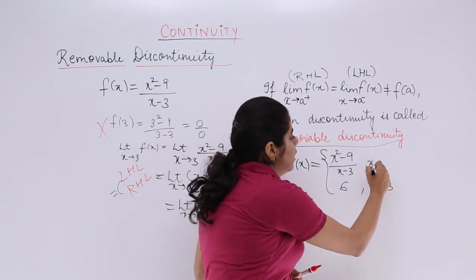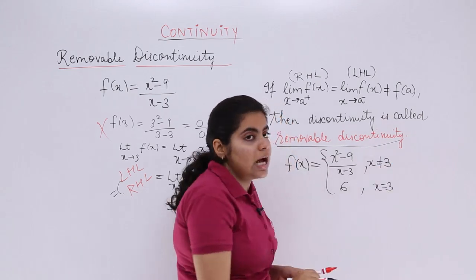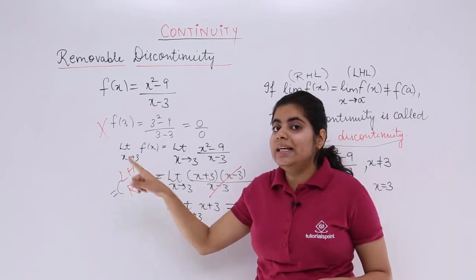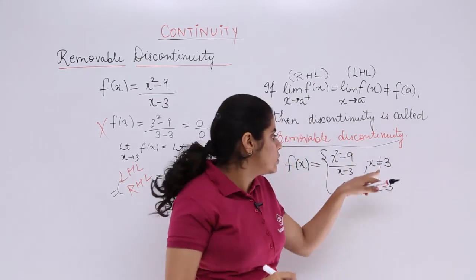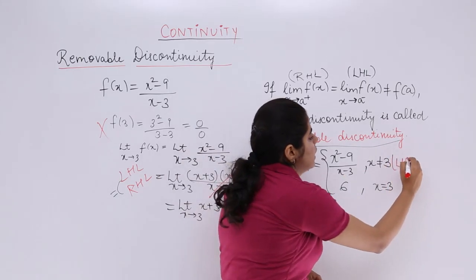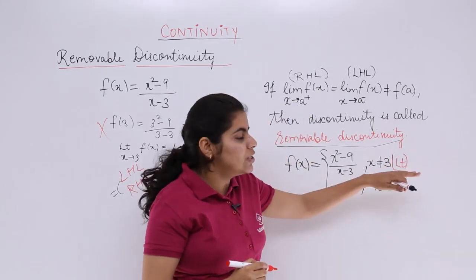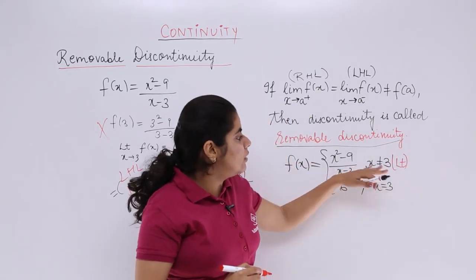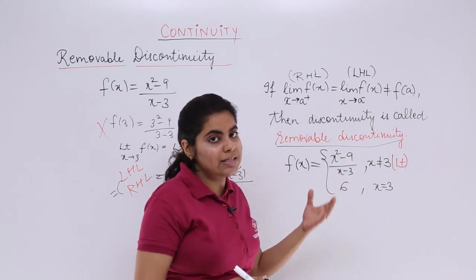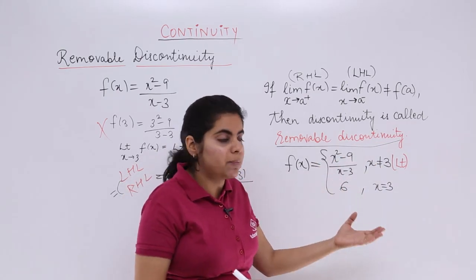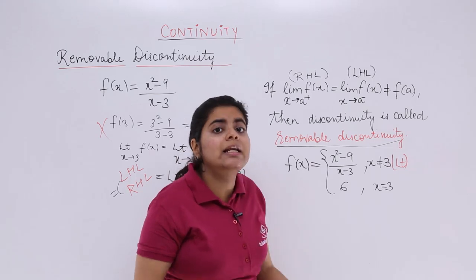And when x is not equal to 3, because I know in case of limits, I say tends to but not equal, so this is the limit wala case, limiting case, right? So when x is not equal to 3, the function will be taken as x² - 9 upon x - 3. When x is equal to 3, directly take it as 6.